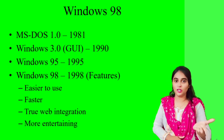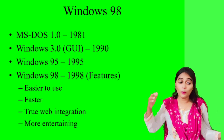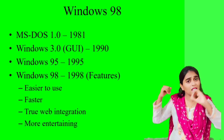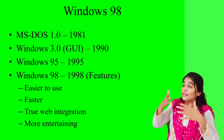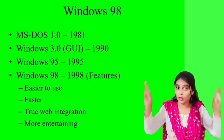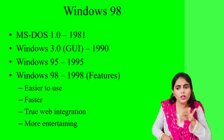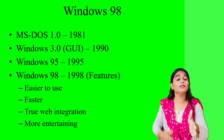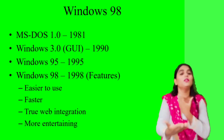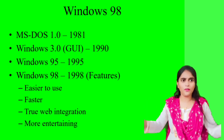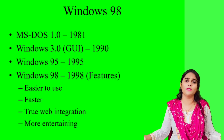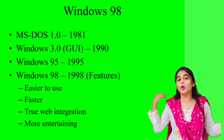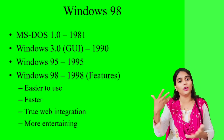The next feature is true web integration. Windows 98 was the first operating system to have a direct view of websites. You could type any domain in a particular browser and see the view of that website in your window. This made Windows 98 website-compatible and truly integrated with the web.